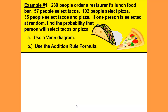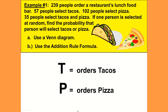Use the Venn diagram for part A and the addition rule formula for part B. We will solve this using both techniques. We will let T represent ordering tacos and P for ordering pizza.